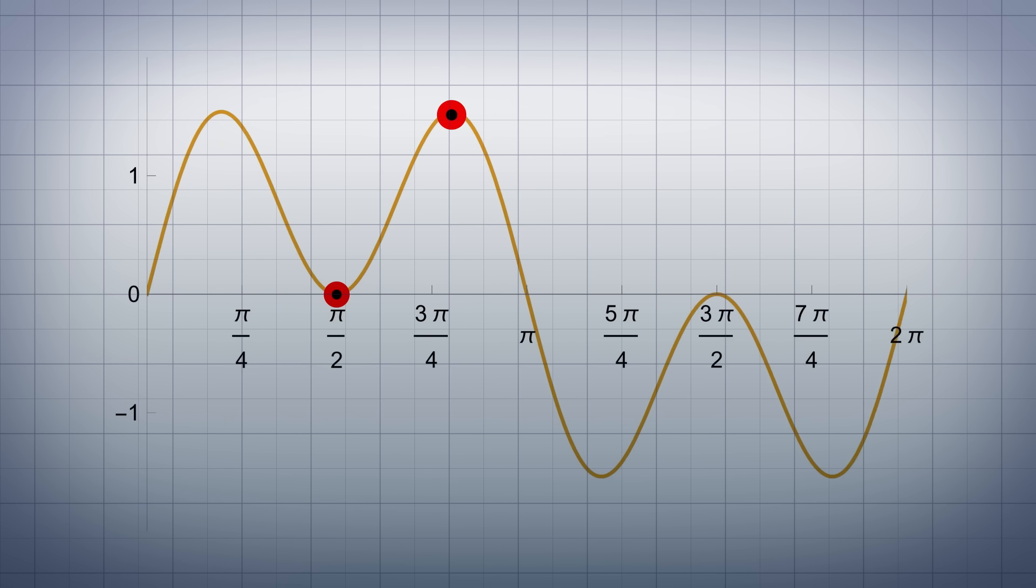When the original functions are both positive, the sum gets bigger, and when one is positive and the other negative, the functions can cancel each other out. This may already look slightly closer to a square wave than a sine wave does.